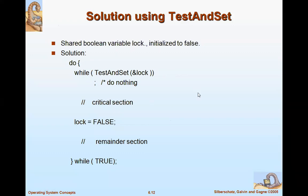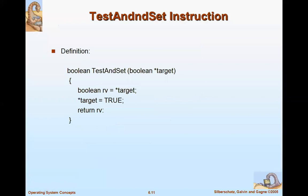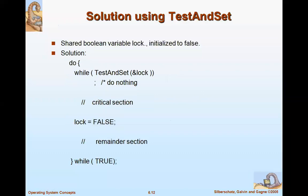Test-and-set sets the target process to true to acquire the lock. If lock itself is false, we cannot proceed; otherwise we enter the critical section and execute it. After execution, set the lock back to false. If a remainder section is needed, go there; otherwise come out of the loop. In exam questions, they ask you to write this code and explain test-and-set.